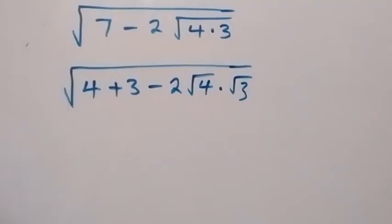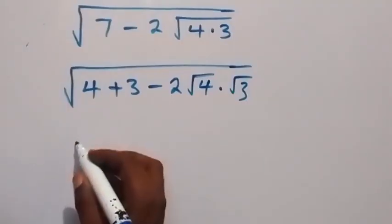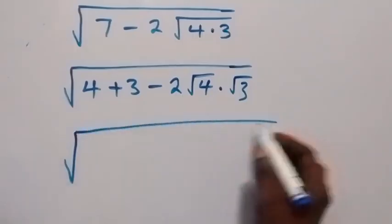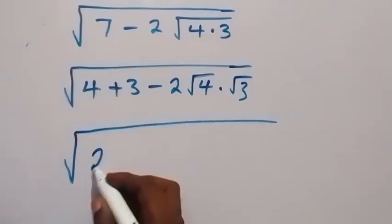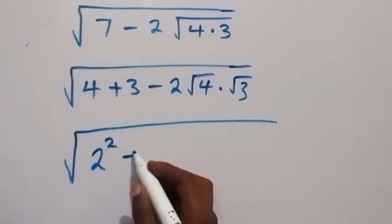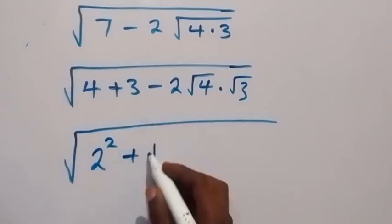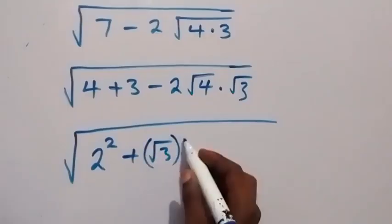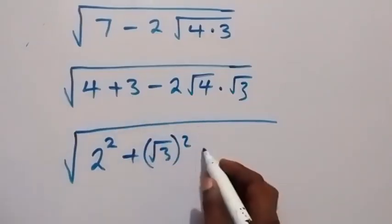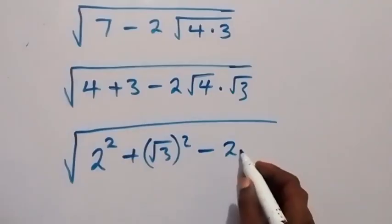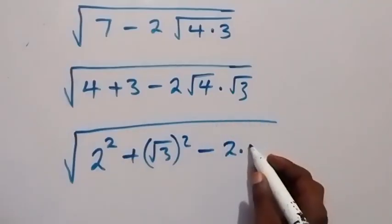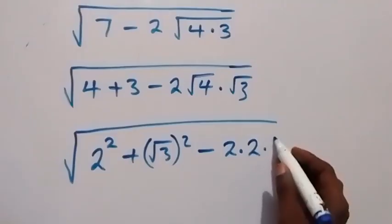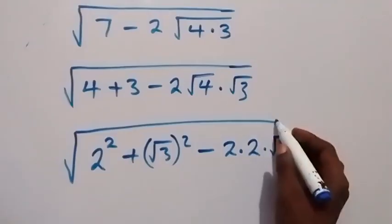And in the next step, we can write this as square root of 4. Here, let's write it as 2 square, then plus 3 can be written as root 3, then square. Square cancel square, same thing as 3, then minus 2 times root 4, plus also 2, then times root 3.